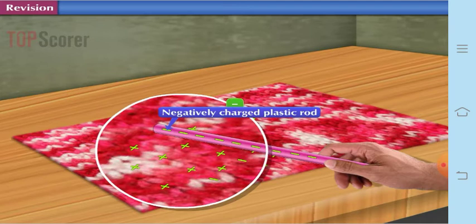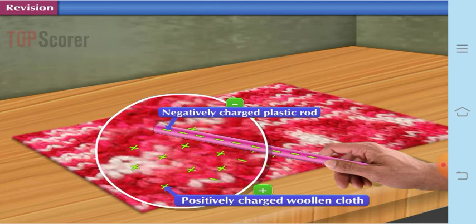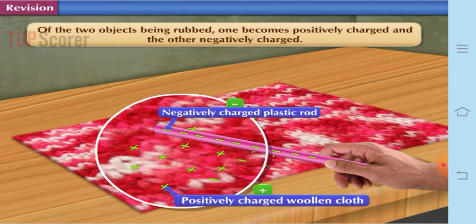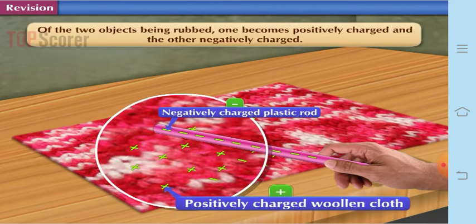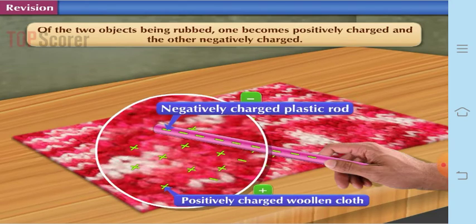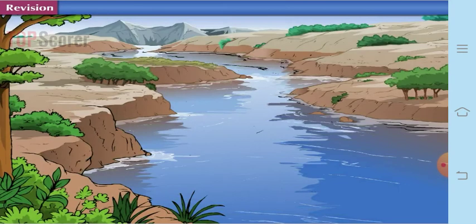Whereas the one which has been rubbed becomes positively charged. Positively charged woolen cloth. This way there is transfer of charges. Of the two objects being rubbed, one becomes positively charged and the other becomes negatively charged. This way the charges are transferred.